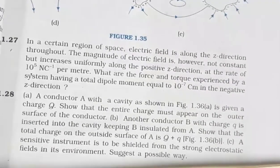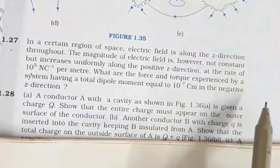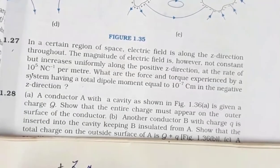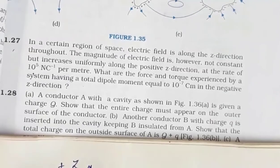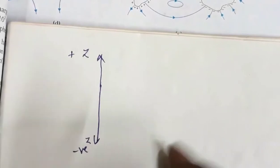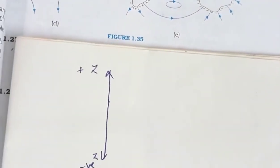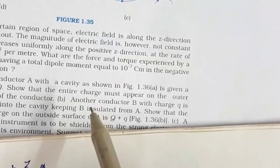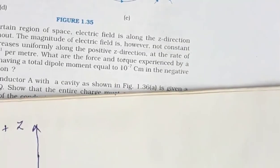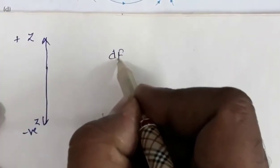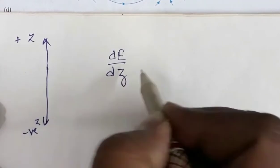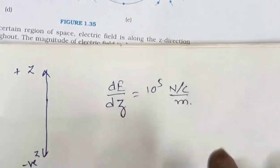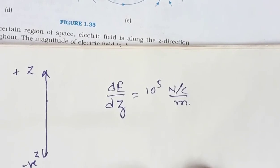What are the force and torque experienced by a system having a total dipole moment equal to 10⁻⁷ coulomb meter in the negative Z direction? The electric field is directed along the positive Z axis and is increasing in that direction. The rate of variation is dE/dz = 10⁵ Newton per coulomb per meter.